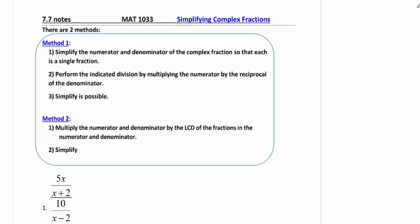We are going to do this one today using Method 2. We are going to multiply the numerator and denominator by the LCD of the fractions in the numerator and denominator. So we're going to look at every single fraction and figure out what the LCD is between those.